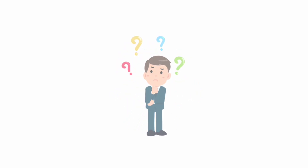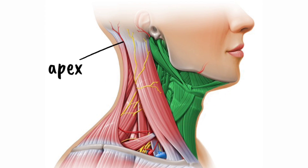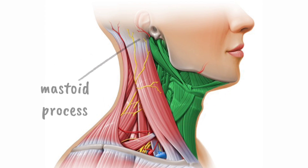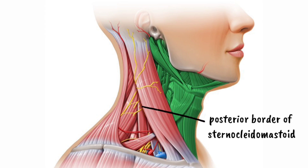The posterior triangle is a triangular space on the side of the neck, behind the sternocleidomastoid muscle. Its apex is pointing upwards and backwards towards the mastoid process and its base is facing the clavicle. Now let us define the boundaries of the triangle. The anterior boundary is formed by the posterior border of the sternocleidomastoid muscle.